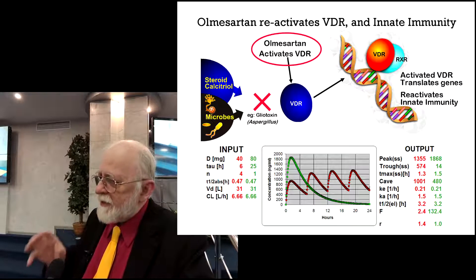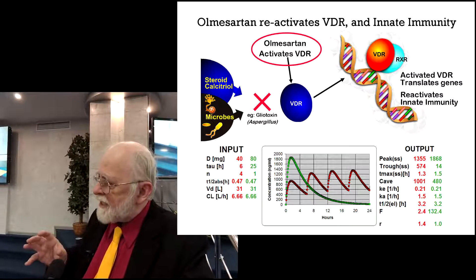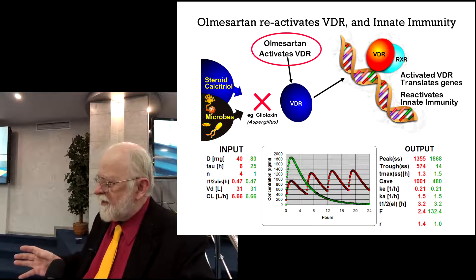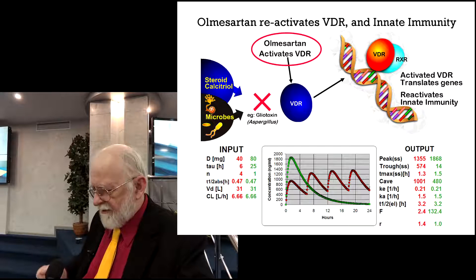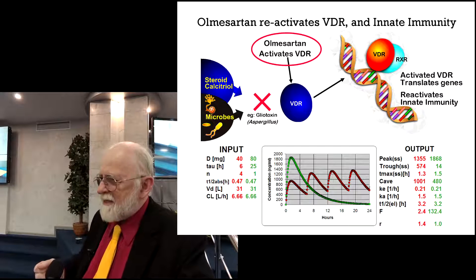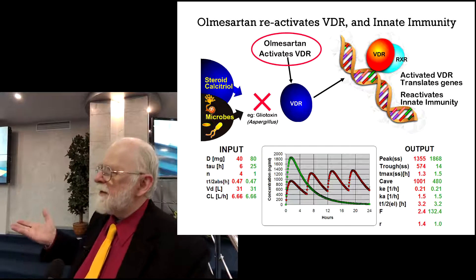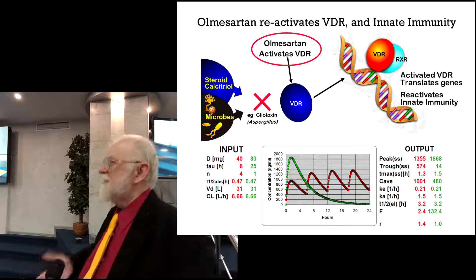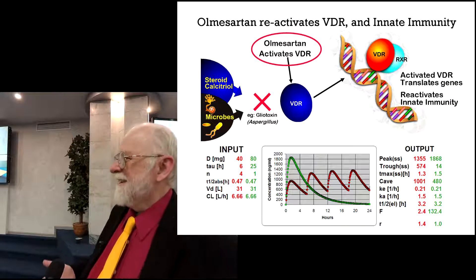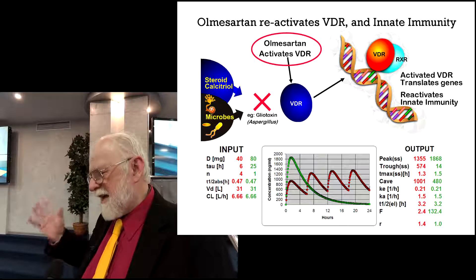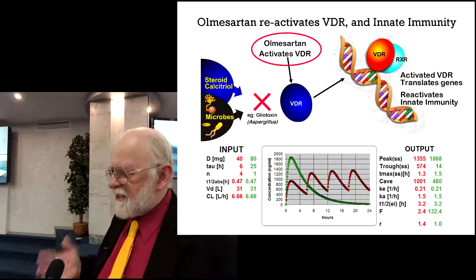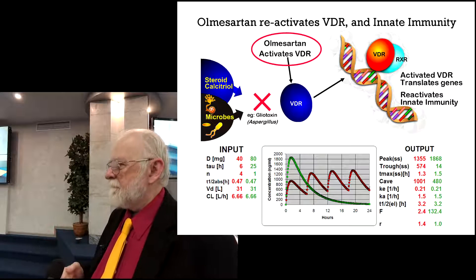Olmesartan is actually not a very good antihypertensive. The head of the FDA cardiovascular division that approved the drug said they found that, given to some patients, it actually raised their blood pressure — because it's also fiddling with the immune system. The evidence-based approach didn't pick that out.